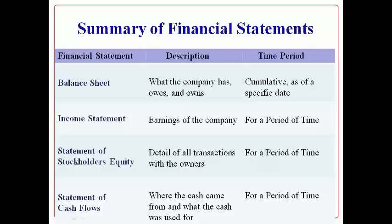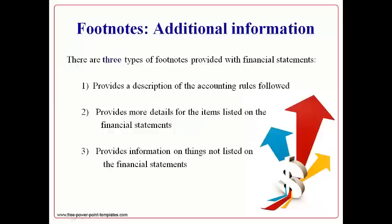The balance sheet reports what the company has, owes, and owns on a specific date, and all amounts are cumulative from the first day of business. The income statement reports the earnings of the company for a period of time. The statement of cash flows reports cash received and cash paid during a certain period of time. The statement of stockholders' equity reports a detail of all transactions with owners during a period of time. Footnotes are provided with the financial statements to provide more detail, including a description of the accounting rules followed and answers to questions investors and creditors have.